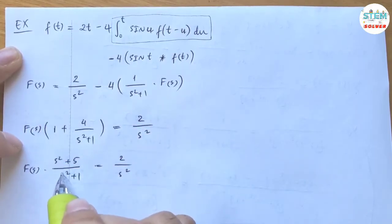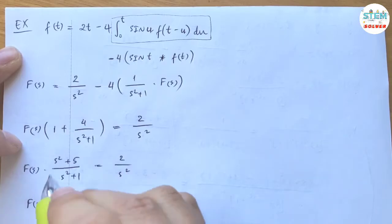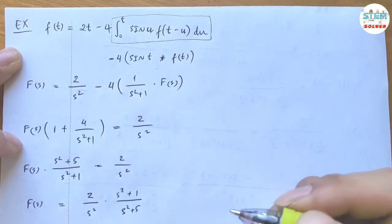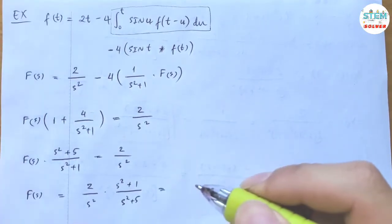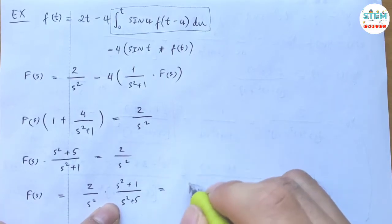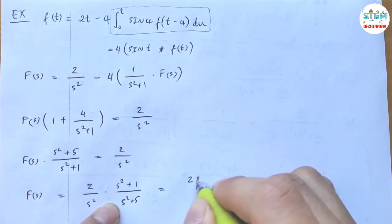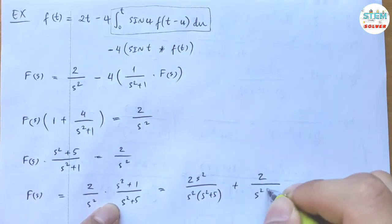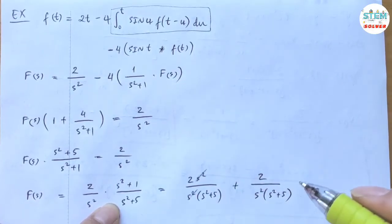Now divide both sides by this one. So I have capital F(s) equals 2 over s² times s² + 1 over s² + 5. And then to shoot this out, we have 2 over s² times s² + 5 plus 2 over s² times s² + 5. So the s² cancel out and we're left with this.